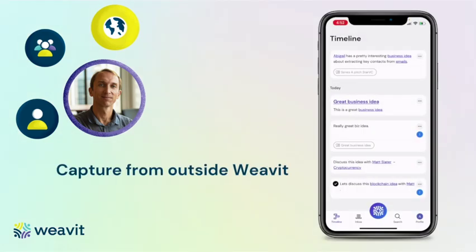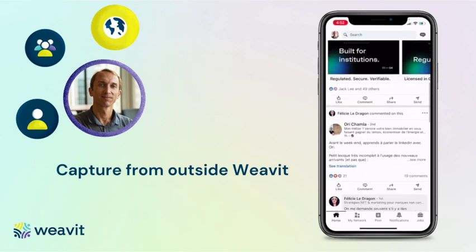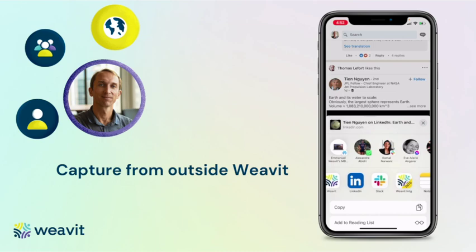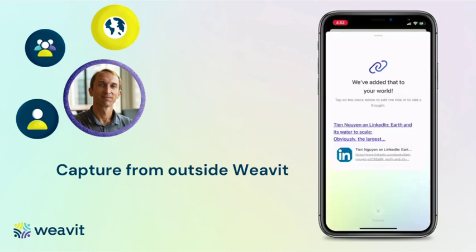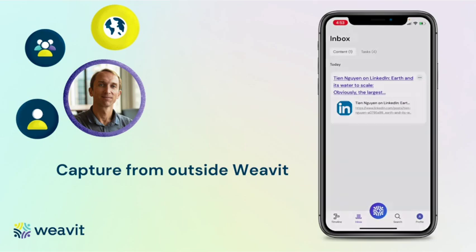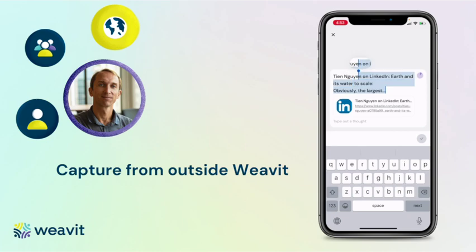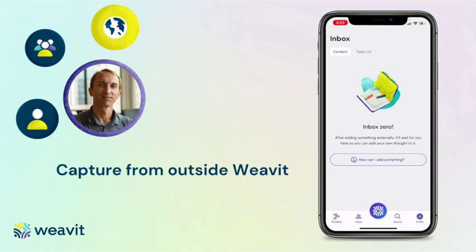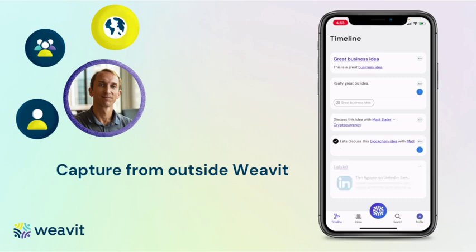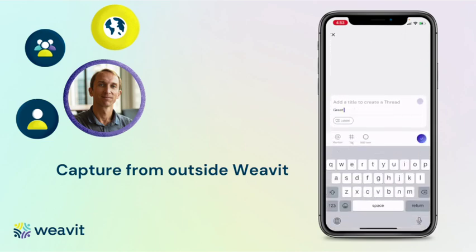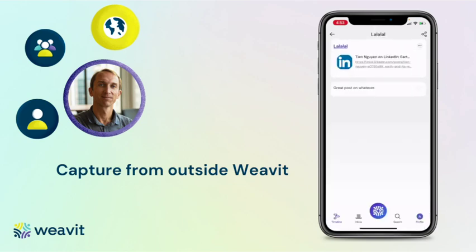The last way to create content in Wivit is to send content from outside. For example, if I want to share a LinkedIn post, I can just share via and send it to Wivit. Later, I go to my inbox and anything I've sent can be found there. I can edit it, change the title, and so on. Once I've worked on the new content, it disappears from the inbox. Back on the timeline, I have this new tweet, which is the beginning of a new thread, and I can add anything to it — this new thought is linked there.